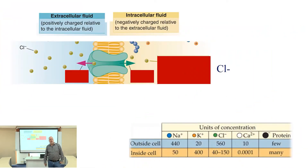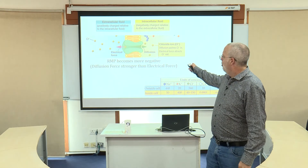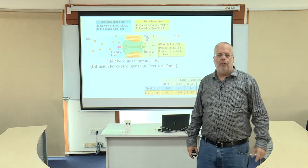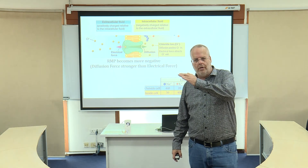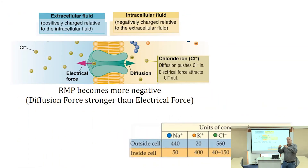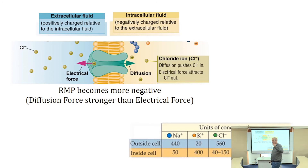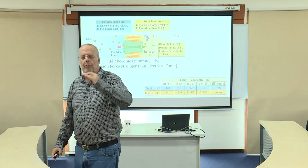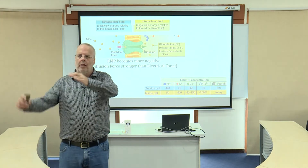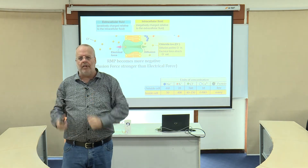Our last ion is chloride, Cl-, a negatively charged ion. There is more chloride outside than inside, so if we open up a channel specific to chloride, the diffusion force is going to push chloride into the cell. But it's a negative ion, which is repelled by the negative interior — it's attracted to the positive outside — so the electrical force is going to push it out. However, the diffusion force is stronger overall, so if we open up a channel for chloride, chloride is going to flow more in than out. As that negative ion moves into the cell, the interior becomes more and more negative — from negative 70 to negative 72, etc.